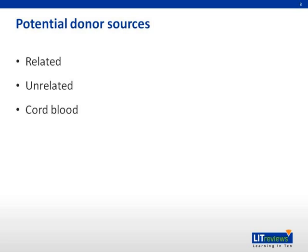Allogeneic hematopoietic stem cells can be obtained from a related donor, usually a sibling, or less commonly a haploidentical donor. This may be the parent of a patient or the child of the patient, or even a sibling with a half-match HLA. An unrelated donor is usually an adult, or in the case of a cord blood transplant, where the source is cord blood.